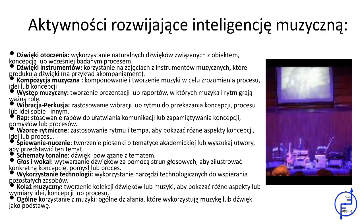Jak rozwinąć inteligencję muzyczną na zajęciach szkolnych? Aby rozwinąć inteligencję muzyczną, możemy wykonywać różne rodzaje aktywności, np. słuchanie dźwięków otoczenia, instrumentów, wystąpień i kompozycji muzycznych, perkusji, wystukiwanie rytmu, a więc w skrócie wszystkie rytmiczne wzorce.